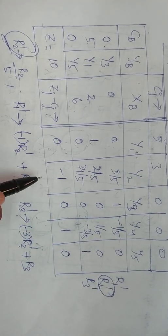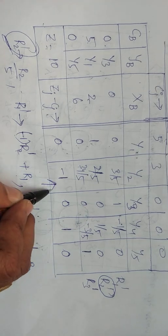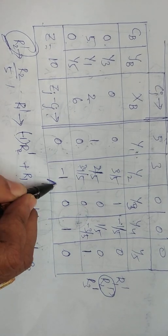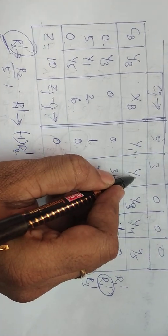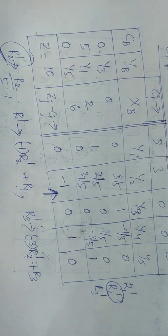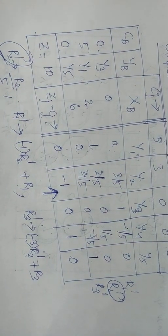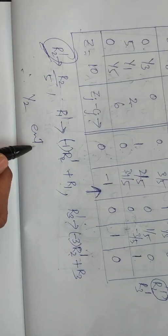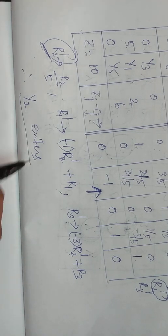There is only one negative value, which is −1. We indicate an arrow mark. The corresponding vector is Y2, therefore Y2 enters the basis.